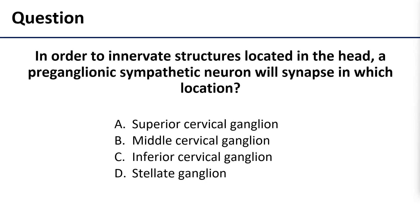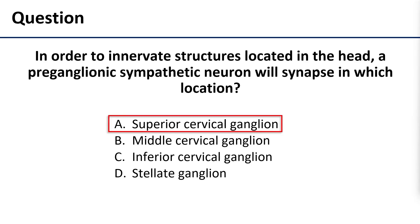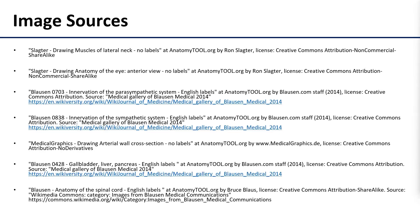That brings us to the end of the material. Here is your review question: in order to innervate structures located in the head, a preganglionic sympathetic neuron will synapse in which location? The correct answer is the superior cervical ganglion. Everything going through the head will synapse in the superior cervical ganglion. If you take nothing else away from this video, please take that much. Thank you for joining me.